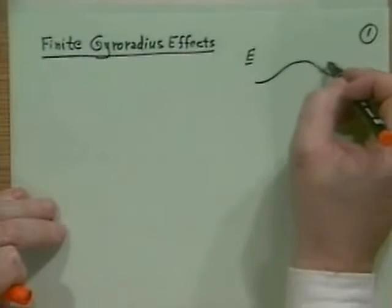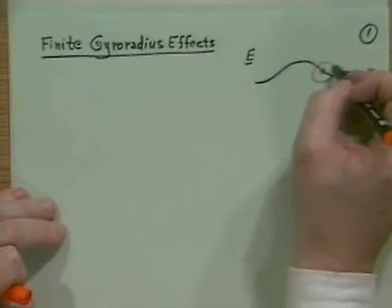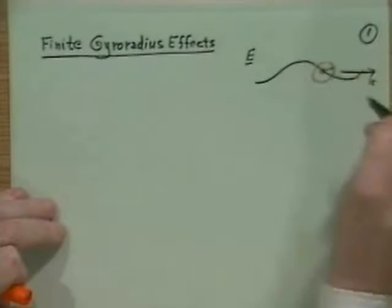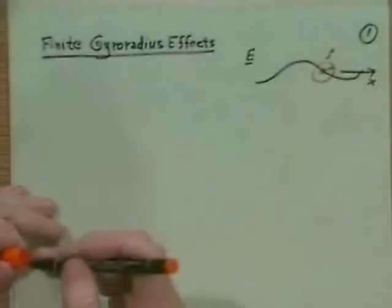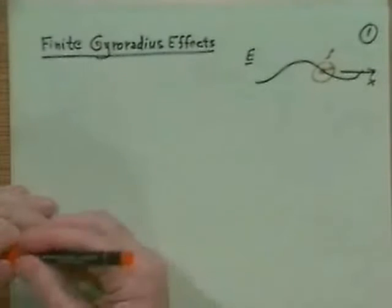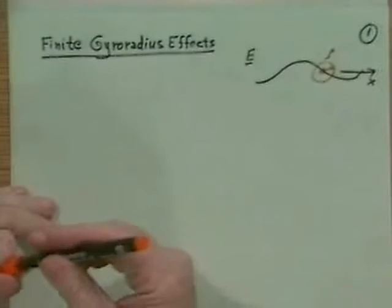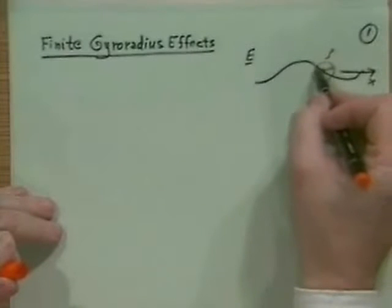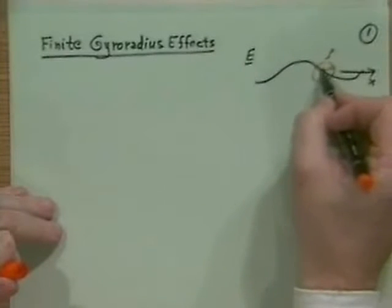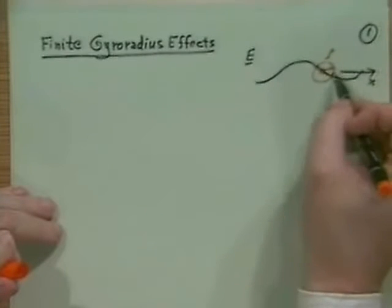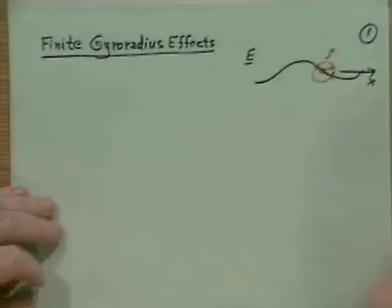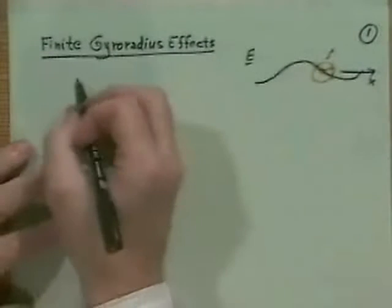On the other hand, what happens if the gyro radius becomes about that big? The problem is I might not get the local electric field, but I might effectively have the electric field averaged over the gyro radius. So the question is: what would happen if that were the case?